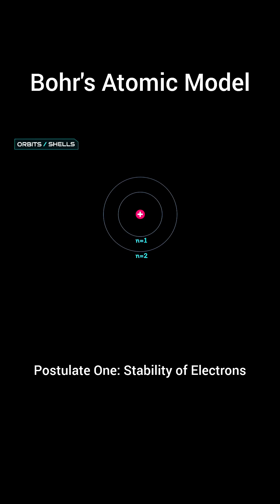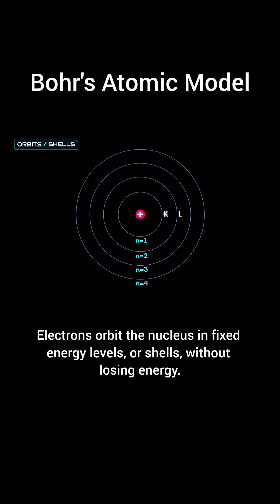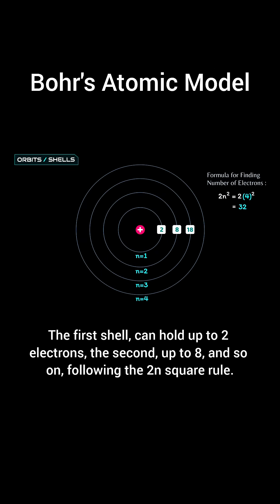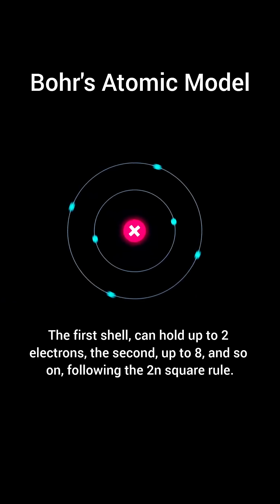Postulate 1: Stability of electrons. Electrons orbit the nucleus in fixed energy levels, or shells, without losing energy. The first shell can hold up to two electrons, the second up to eight, and so on, following the two n-square rule.